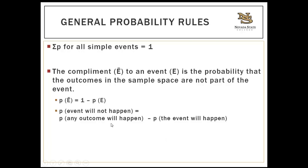Another general rule: if you add up all the probabilities for all simple events for a single variable, you will get 1. For instance, if 60% of the class are females and 40% are males — probability of 0.60 for females and 0.40 for males — then the probability of selecting either a male or a female is 1, or a 100% chance.